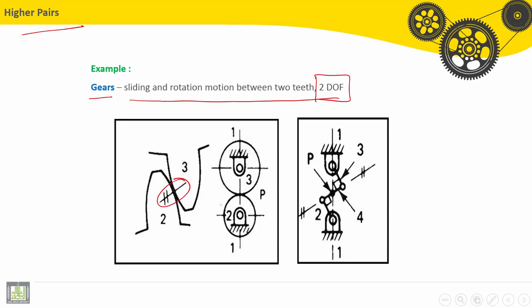The contact here, between teeth number one or number two and teeth number three, it is line. That's why it is a higher pair. And we have sliding and rolling. Then the total is two degrees of freedom.